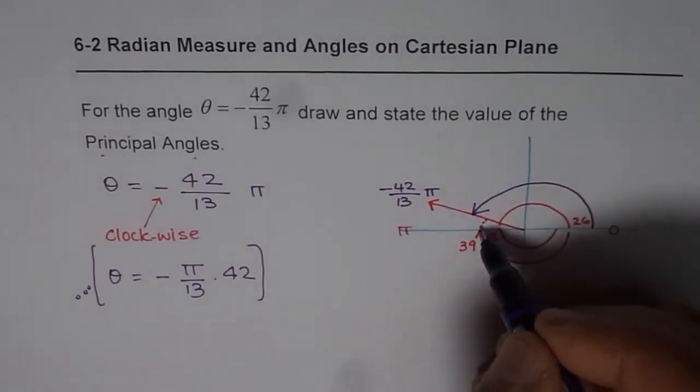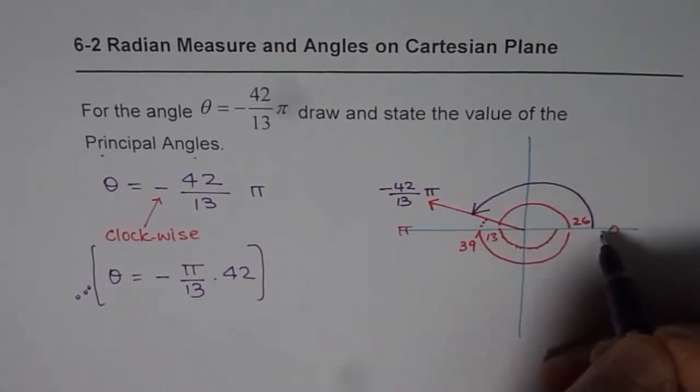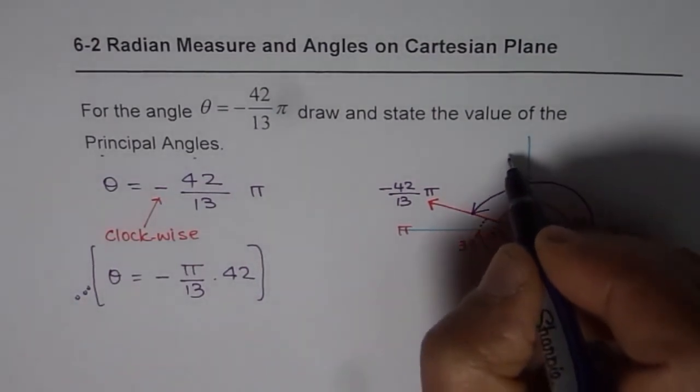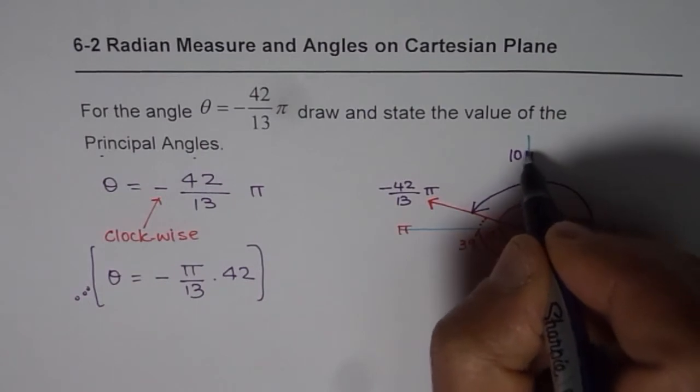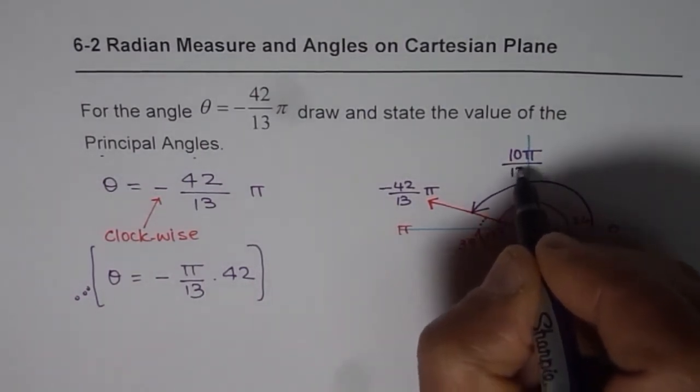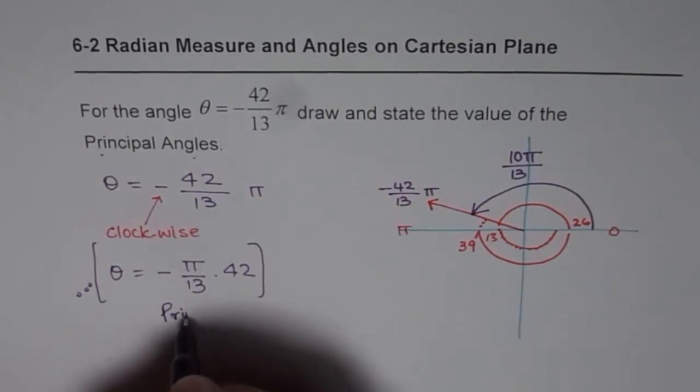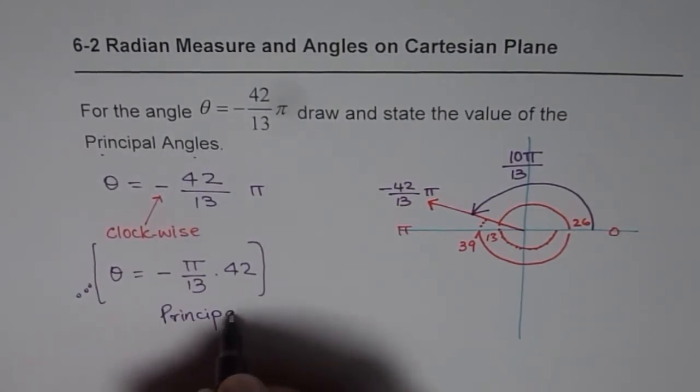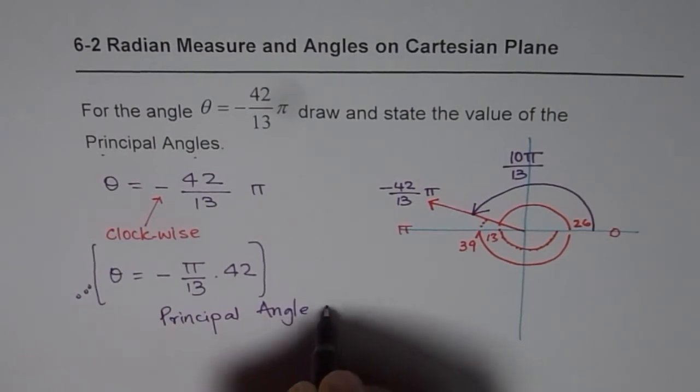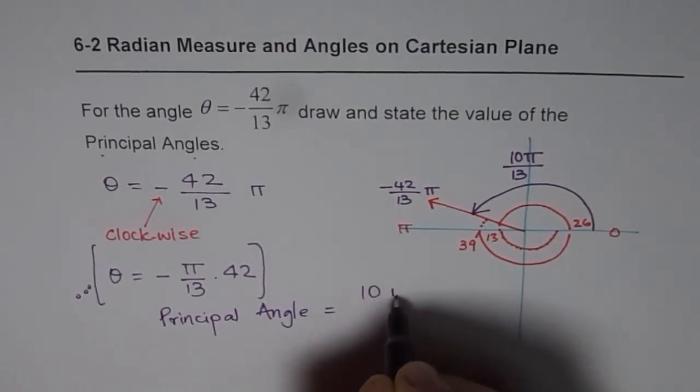Now see, there are 3 here: 1, 2, 3. So how many left? There are 13 in all. So the principal angle will be 10 π over 13. So we get the principal angle equals to 10 π over 13.